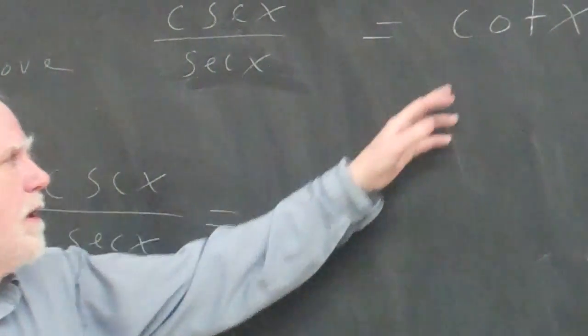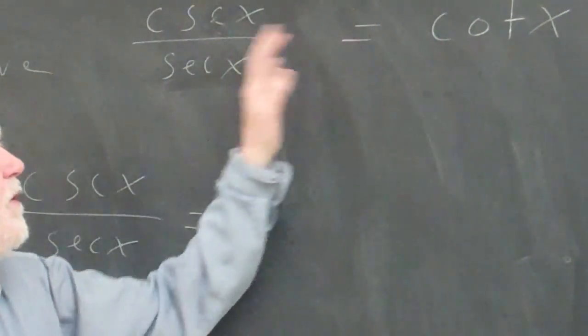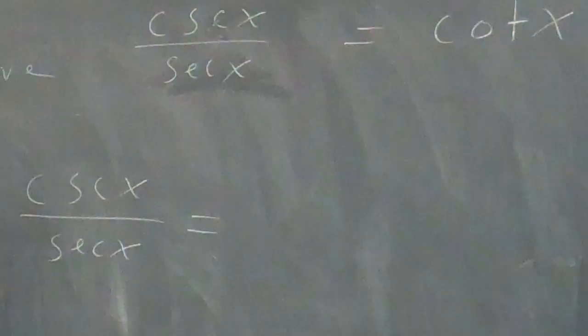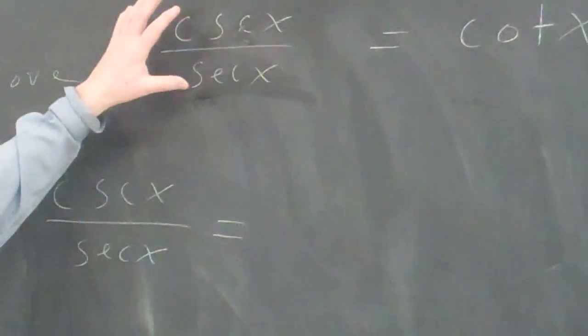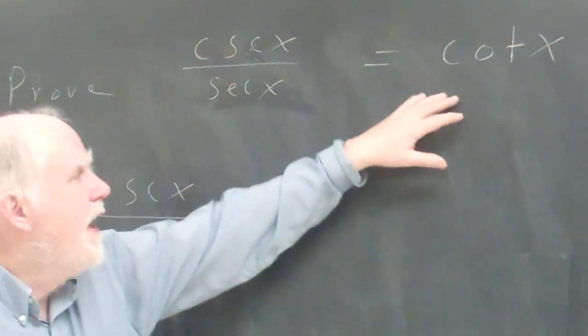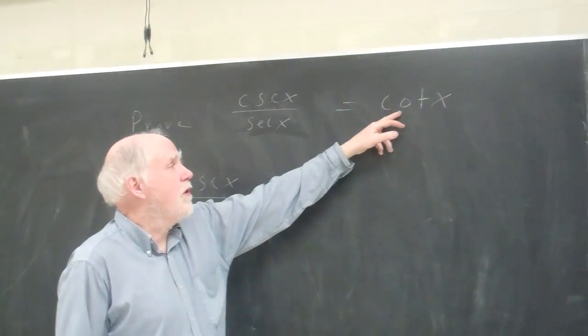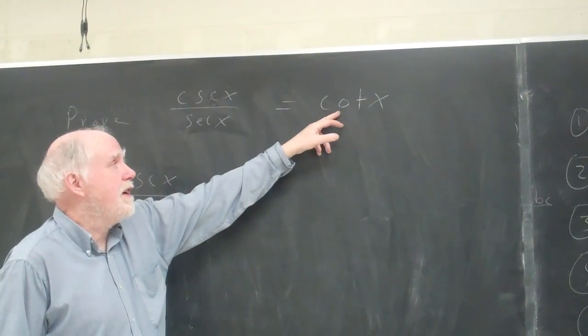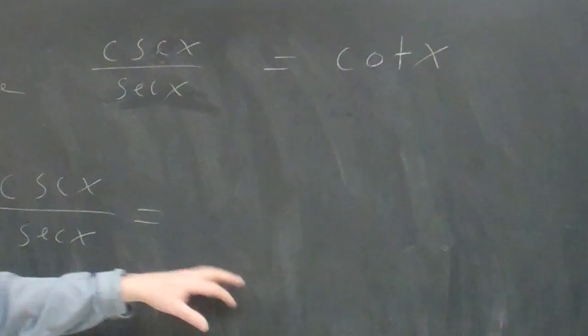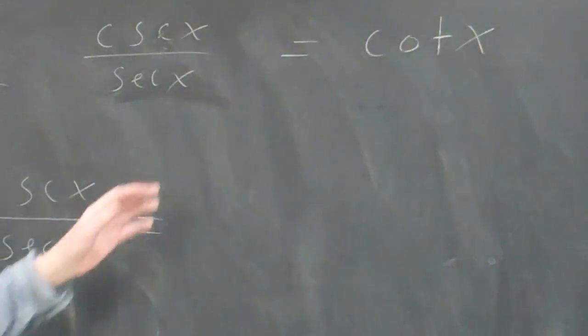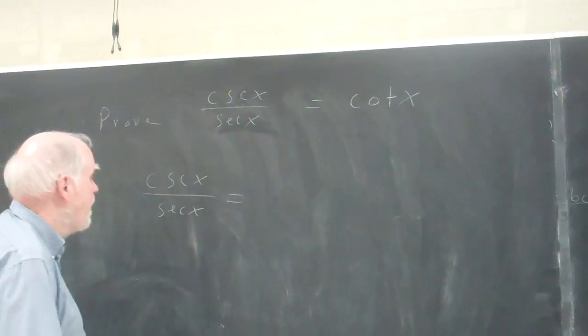I can think ahead a little bit. I can't use both sides of the equation to get this thing proved. I have to start with one side and stay with it. But I know I'm trying to get to the cotangent, which is cosine over sine. So if I can get this to cosine over sine, then I'm there.